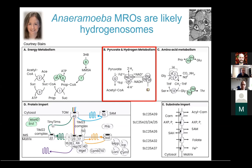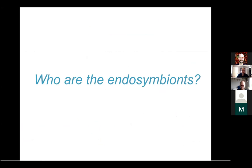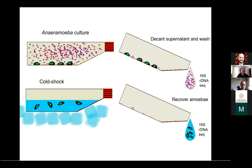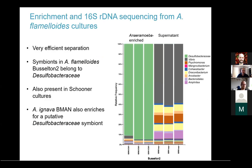What we didn't know was what the endosymbionts were, and this is where I was drafted into the project. We started large-scale cultivation of amoebas received from the Shepitschka lab. We devised a protocol to enrich for amoebas and used 16S sequencing to determine the taxonomy of the prokaryotes inside. We selectively enriched for the cells by rinsing them and then doing a cold shock to selectively dislodge amoebas.